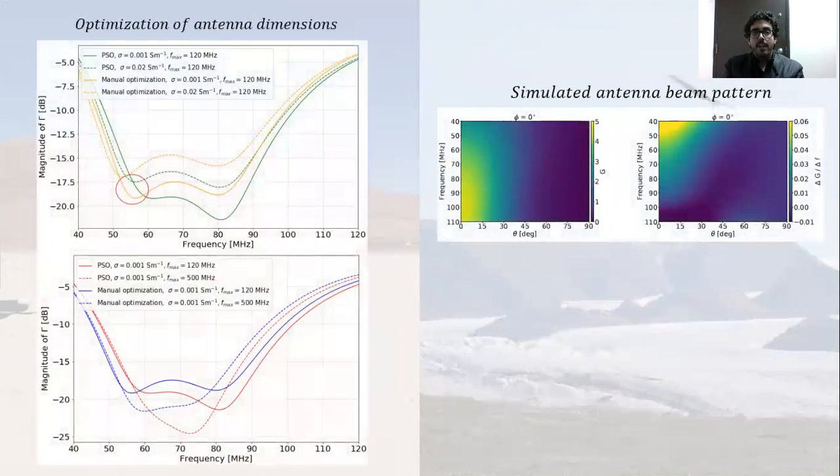After that, we also made an optimization of the antenna dimensions, and we were happy with an antenna that achieved low reflections on lower frequencies, as we can see in this plot on the left. The simulated beam antenna pattern is the one that we can see on the right, and we can also note that it's also expectedly smooth.